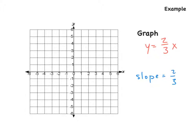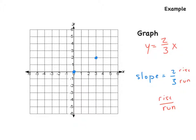Now we've made our two points. Draw a line that extends beyond, and always draw the two arrows showing that it's going to be an extending line. So now we have our graph of y equals two-thirds x.